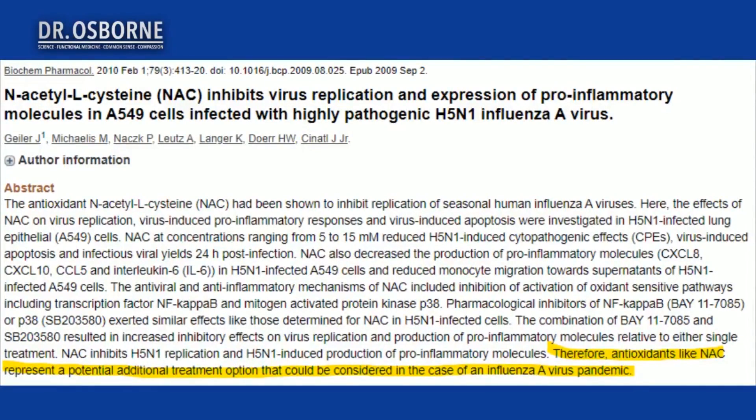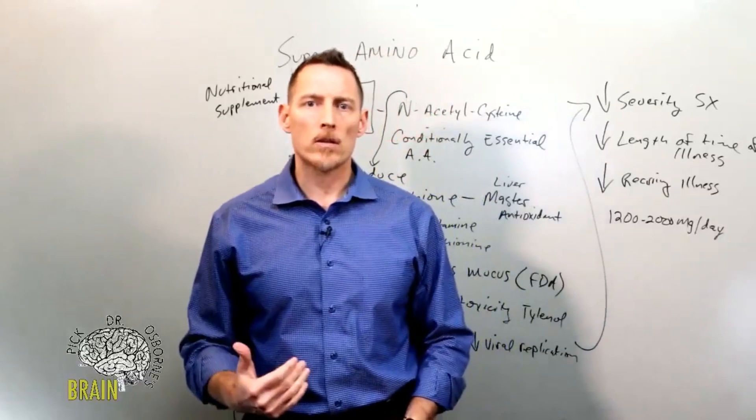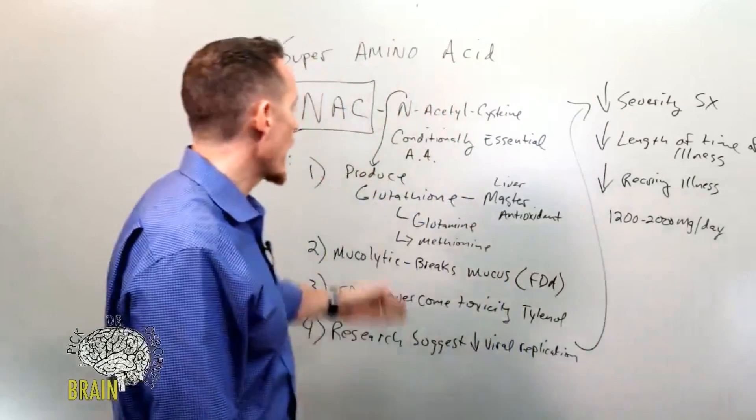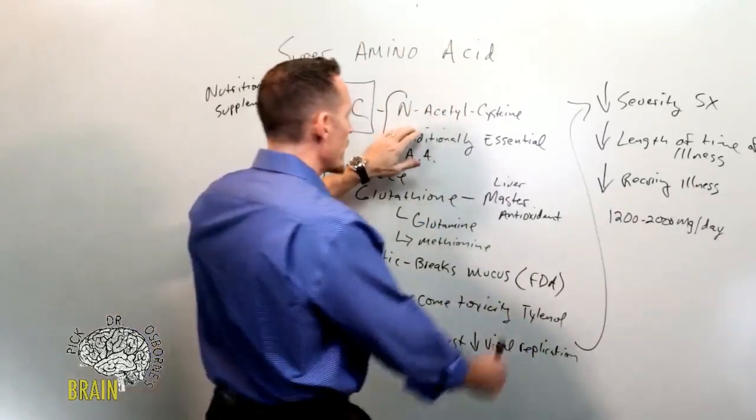I just showed you a research study, and we'll pop another one up for you where you can see the impact on N-acetylcysteine on viral replication and inflammation. I'm just paraphrasing here - you can see therefore antioxidants like N-acetylcysteine represent a potential additional treatment option that could be used in the event of an influenza outbreak. So again, very strong, very potent effects, but doctors ignore the research on this and they continue to make recommendations that don't really have any great effects.